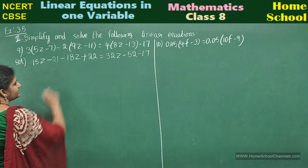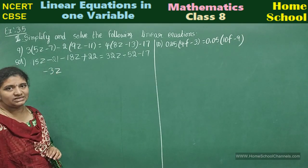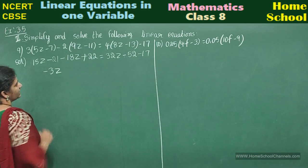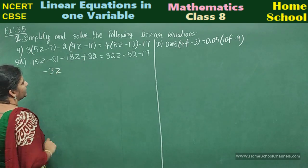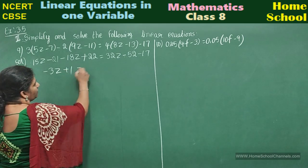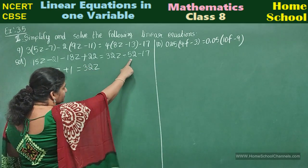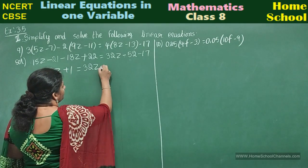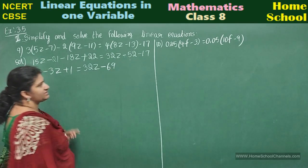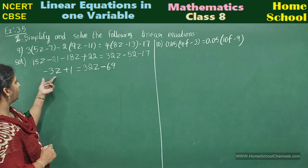So slowly you can do this. Where is the z variable? Here, here, and here. So 15z minus 18z will be minus 3z. Minus 21 plus 22 is 1. Minus 3z plus 1 equals 32z minus 52 minus 17. Add the numbers: minus 52 minus 17 is minus 69.